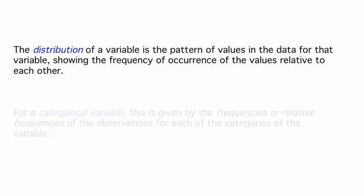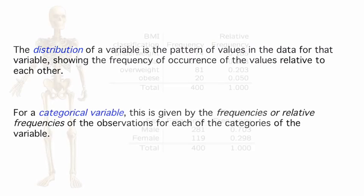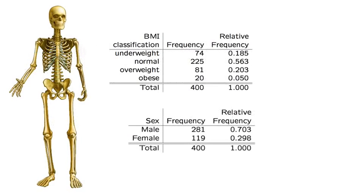In this video, we'll look at how we might examine the relationship between two categorical variables. For categorical variables, the distribution is given by the counts or frequencies, or the relative frequencies, of the observations for each of the categories of the variable. In an earlier video, for the anthropology data of measurements on 400 skeletons, we saw the distribution of BMI classification and sex. Now, what if we're interested in looking at these two categorical variables together?